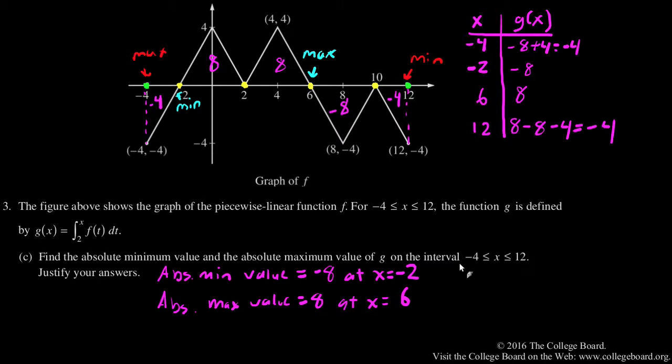And the reason for this is the only x values that have extrema, based on what we set up here, are x equals negative 4, negative 2, 6, or 12. And that's the lowest, and that's the highest value that we get.